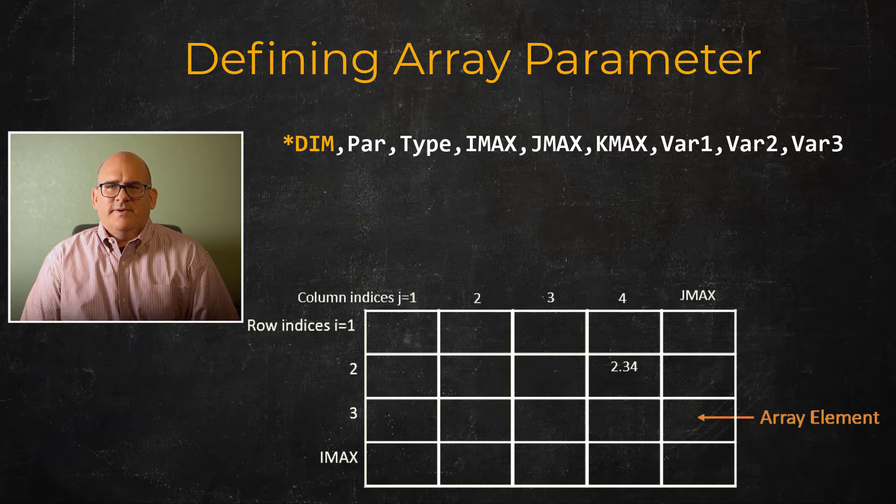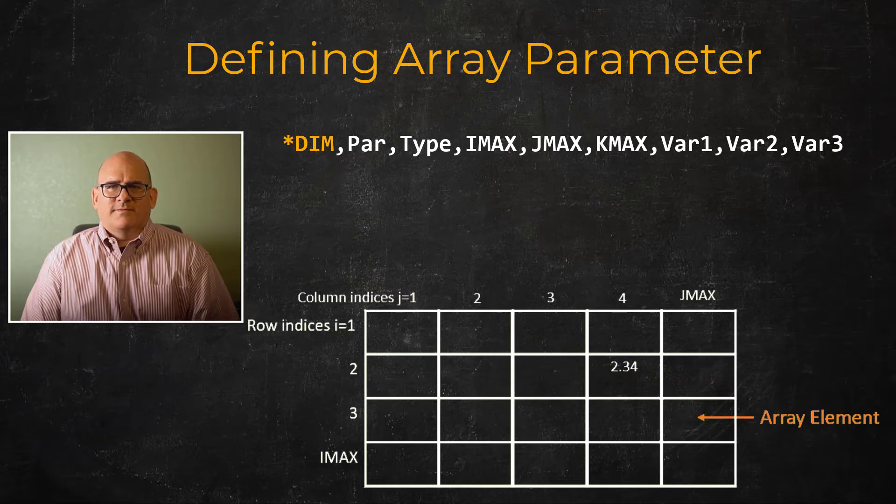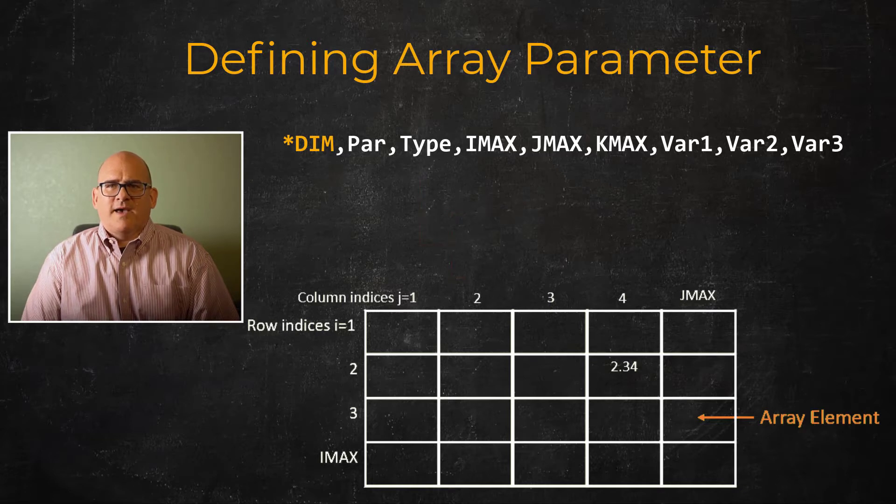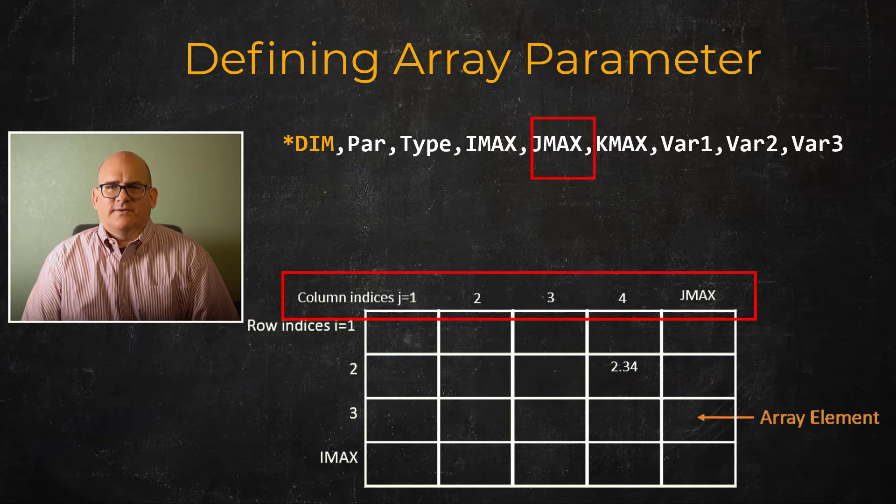We can define arrays in any Mechanical APDL processor with the *DIM command. The basic form to define a one through three D array is as follows: par is the name of the array. The type can either be ARRAY or TABLE. For four and five D arrays, there are specific type names such as AR4, TAB4, and so on. The imax, jmax, and kmax fields define the extent of the dimensions, that is the number of rows, columns, and planes of the array.